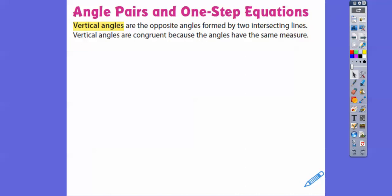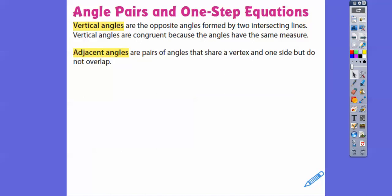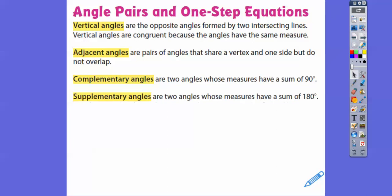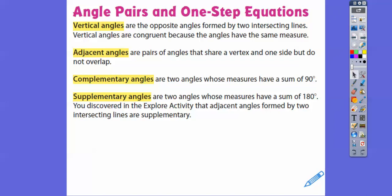Angle pairs — vertical angles are the opposite angles, like 1 and 3, and 2 and 4 — formed by intersecting lines. Vertical angles are always congruent and always have the same measure. Adjacent angles are angles that share a vertex and one side but don't overlap. Complementary angles are two angles that add up to 90. Supplementary angles are two angles that add up to 180. Those adjacent angles formed by intersecting lines were supplementary.